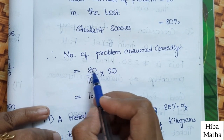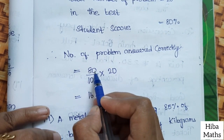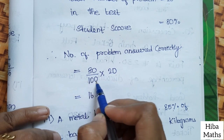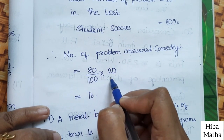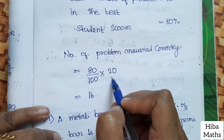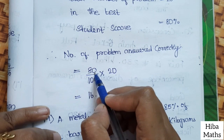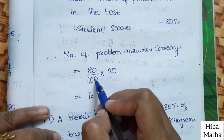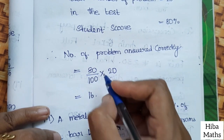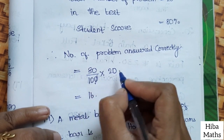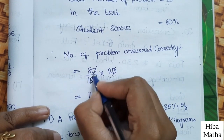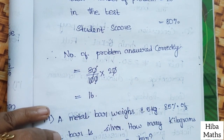Percentage is 80%. So, 80 by 100 into total number of problems is 20. That is how many problems did the student answer correctly. So, the zeros cancel — 0 and 0 cancel here.